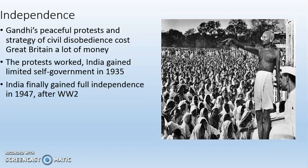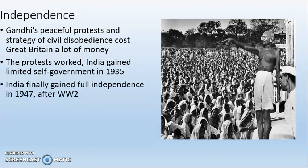Gandhi's ideas of peaceful protest and civil disobedience cost Great Britain a lot of money and political capital. The British government was looking bad at home, and they didn't like this. The protests worked. Without firing a shot, India gained a limited form of self-government in 1935, right before the outbreak of World War II. This was because Gandhi was smart enough to know that if he cost the British enough money, made it not worth their time to stay in India, and made the British look bad on the world stage, they would leave. And they did — finally leaving in 1947, shortly after World War II, when India gained full independence.